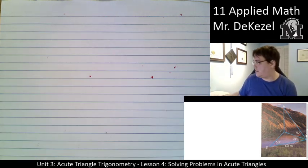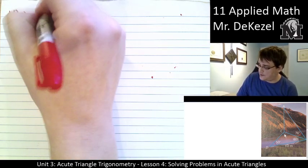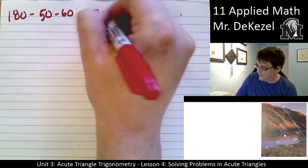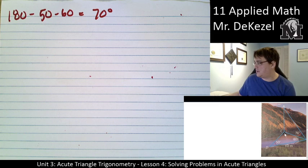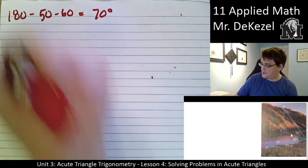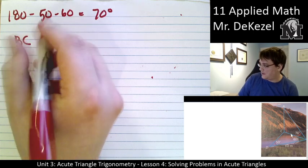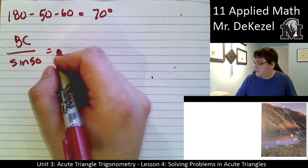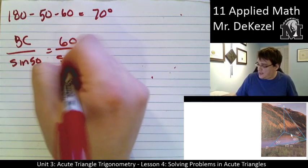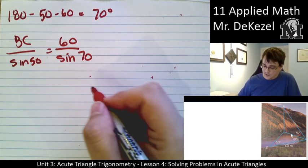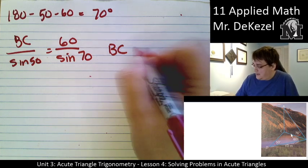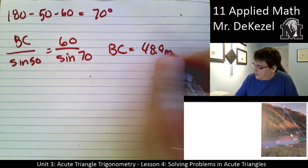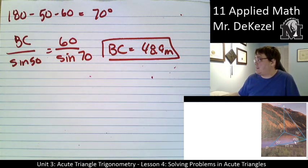I'm going to want to find out what side BC is. Let's start by finding our other angle. Angle C here would be 180 subtract 50 and 60. So 180 subtract 50 subtract 60 gets us 70 degrees. So this angle is 70 degrees and it is across from 60 meters. I want to find out what this side is over here. So side BC over sine of 50, that is the angle across from it, would be equal to the side 60 over the sine of 70. We can rearrange this. We would find that side BC equals 48.9 meters.